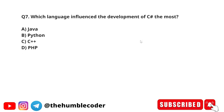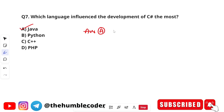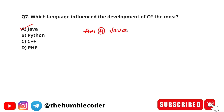Which language influenced the development of C sharp the most? The options are: A) Java, B) Python, C) C++, and D) PHP. The correct answer is option A — Java. C sharp was heavily influenced by the Java programming language, and if you have coded in both you must have noticed the similarities.